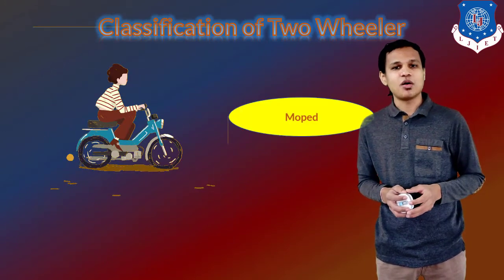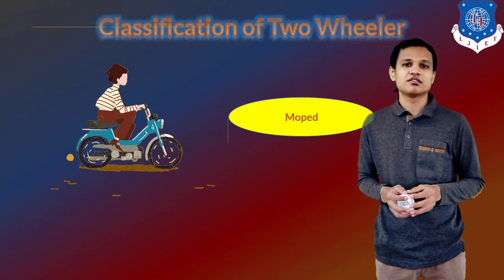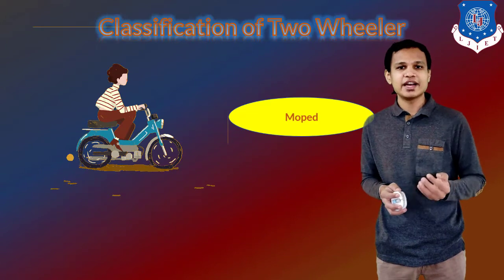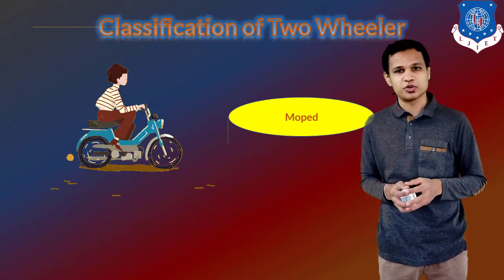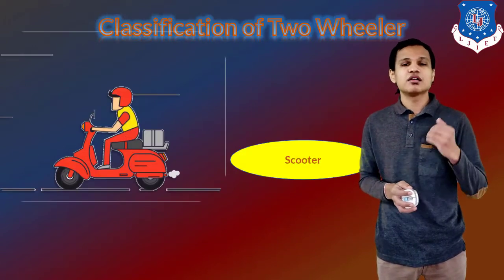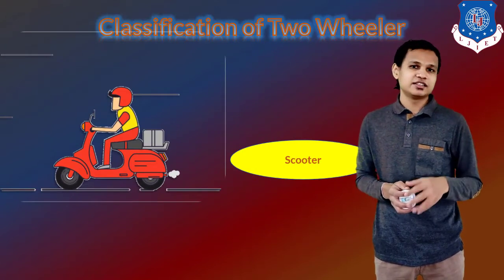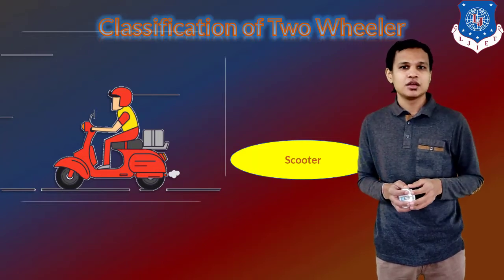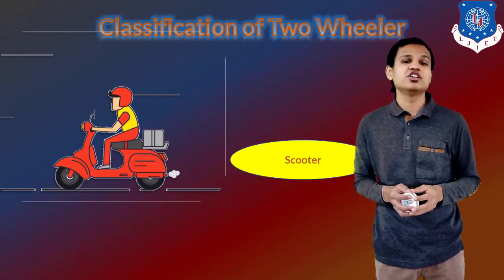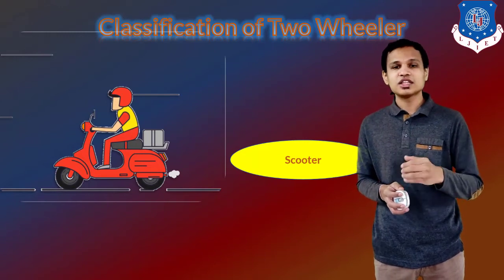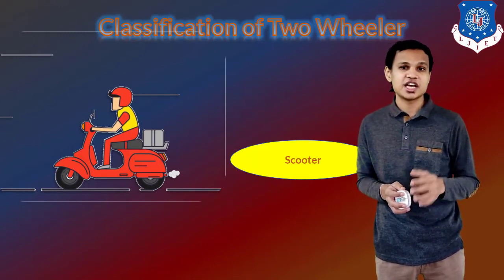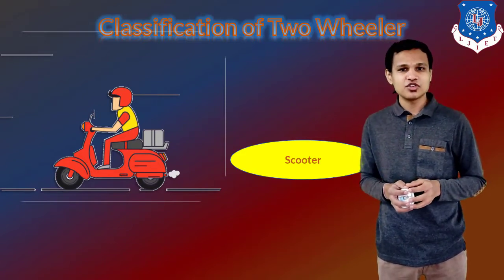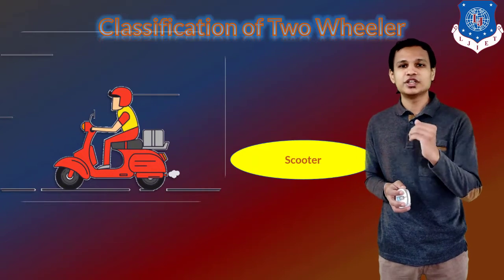The second thing is the moped. As we discussed, the moped is the version of the Luna, where the pedal is provided and the engine is also provided for mechanical power. The third one is the scooter — the scooter that runs on mechanical power with manual transmission. Also, vehicles that run on automatic transmission, such as the Activa, Jupiter, etc., which run on CVT, also come in the category of the scooter.